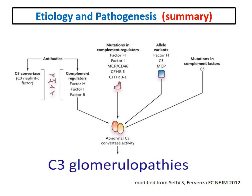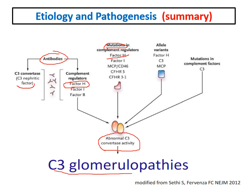Abnormal C3 convertase activity may be due to antibodies to C3 convertase — the best example being C3 nephritic factor — or antibodies to complement regulators such as complement factor H, or mutations in these regulators including factor H or allele variants, or mutation in complement itself making it more resistant to the action of these regulators.